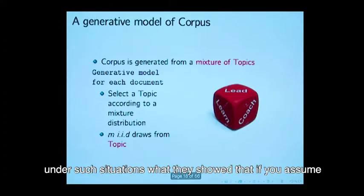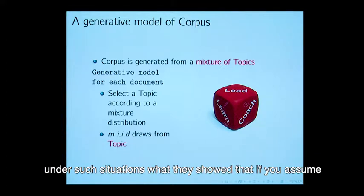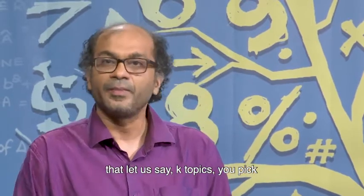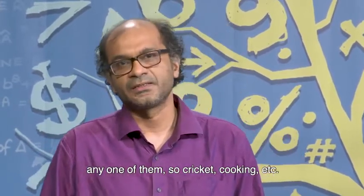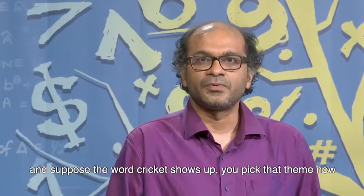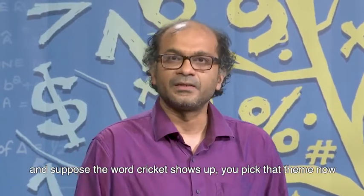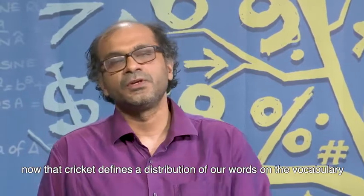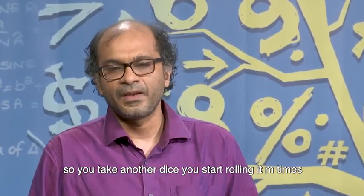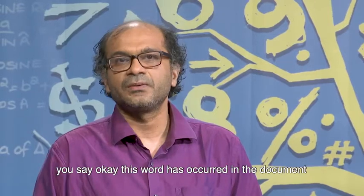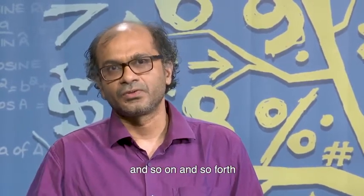Under such situations, they showed that if you assume that each document is generated as follows: there are let us say k topics, you pick any one of them, cricket, cooking, etcetera. You roll a k face dice and suppose the word cricket shows up, you pick that theme now. That cricket defines a distribution over words on the vocabulary. You take another dice and then you start rolling it m times. Each word shows up, for example the word inning shows up, you say okay this word has occurred in the document and so on and so forth.